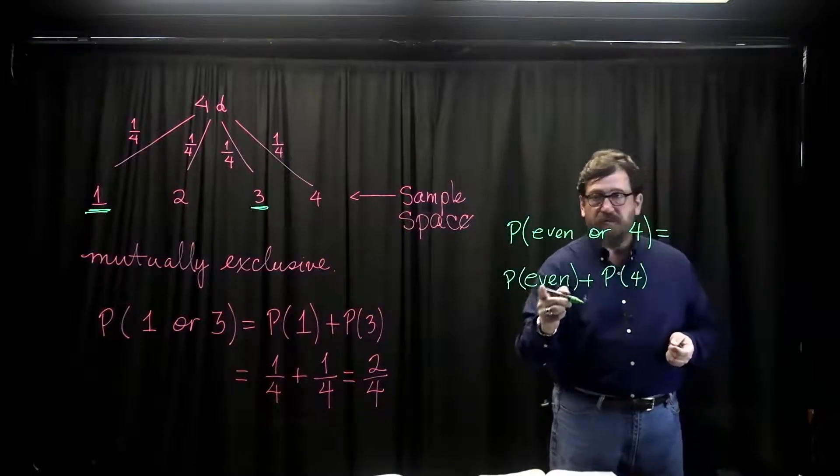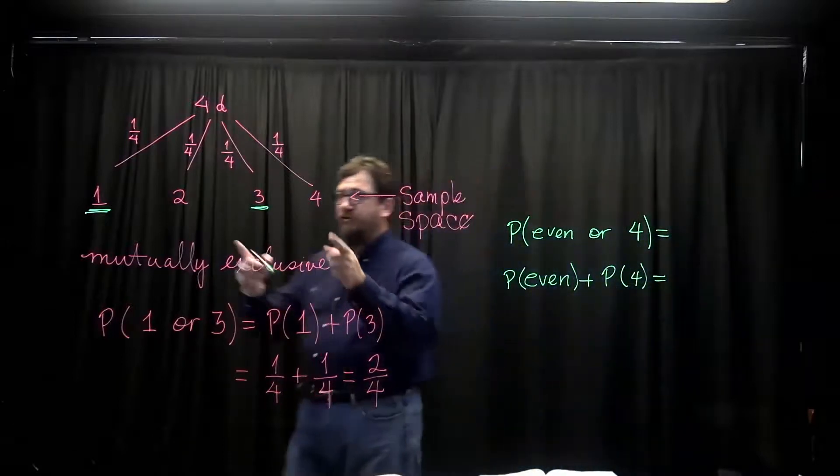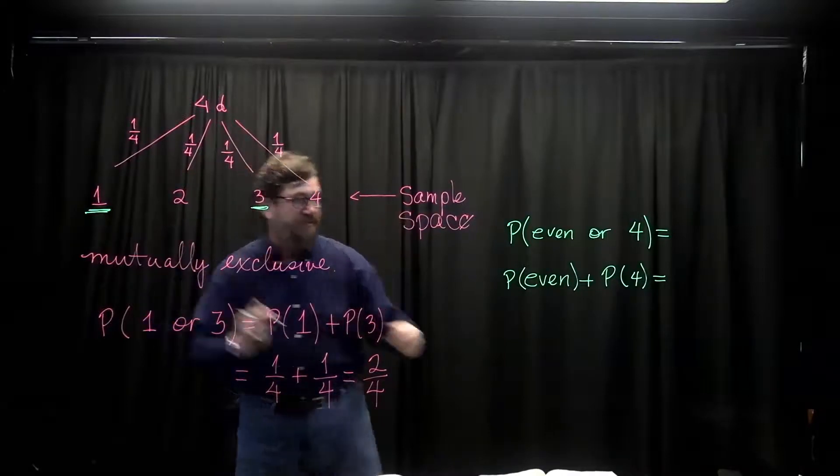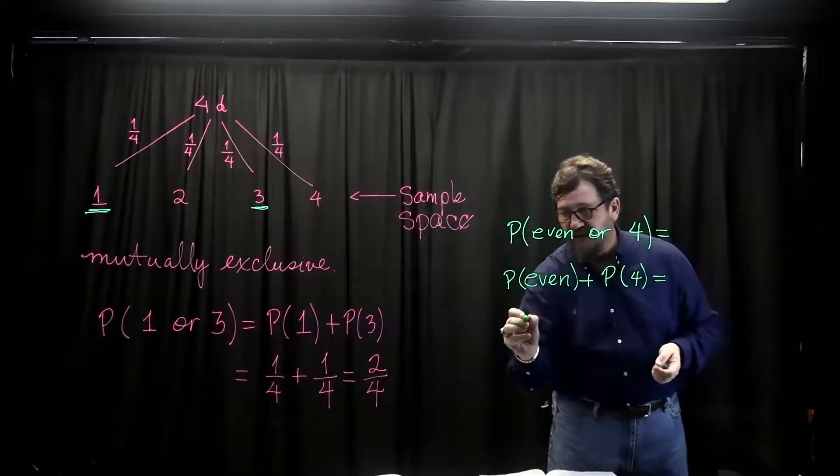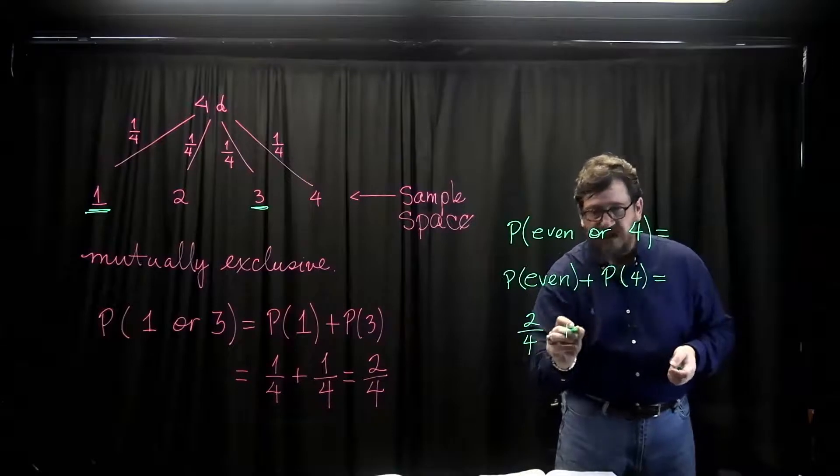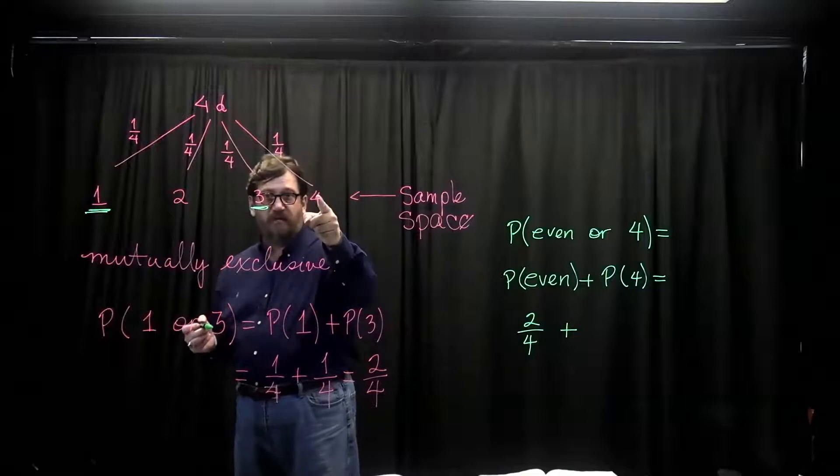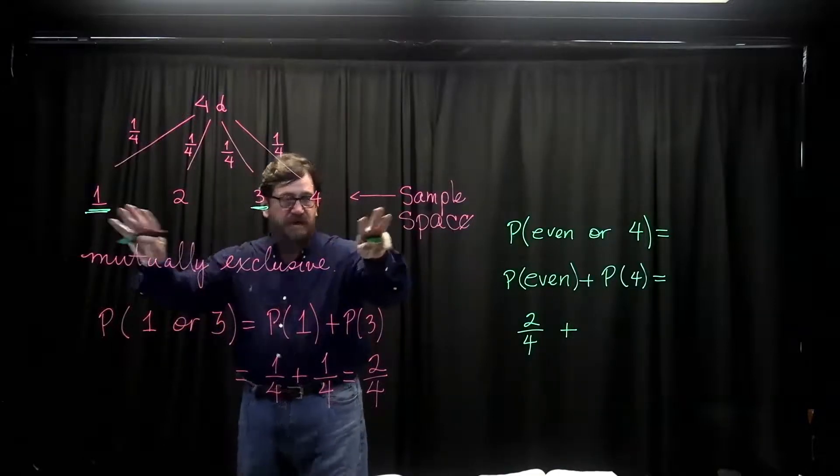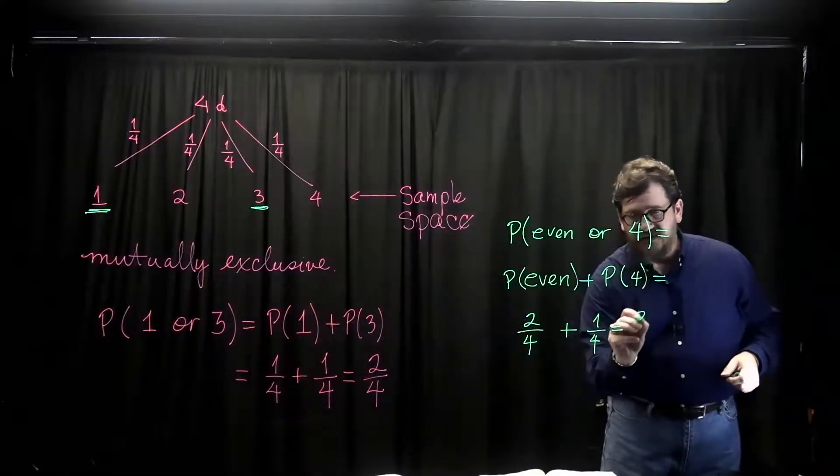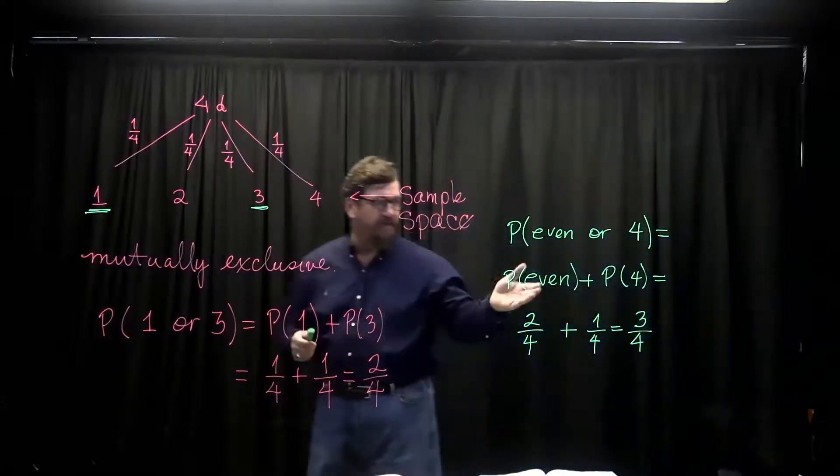Now then, what's the probability of tossing an even number? Well, even numbers are twos and fours and I see two of those out of a sample space of 4. So the probability of even is 2 out of 4. Then we see plus and now we ask what's the probability of tossing a 4? That's one-fourth because there's one 4 out of a sample space of 4. When I add this together, I would see a total probability of three-fourths.